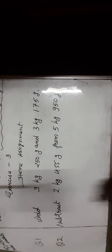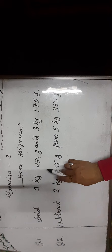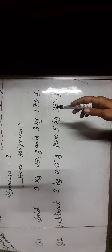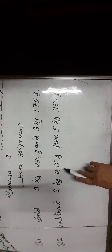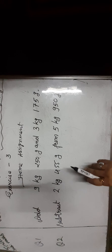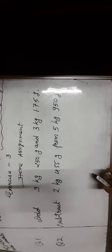Your homework is: add 9 kilogram 250 grams and 3 kilogram 175 grams, and subtract 2 kilogram 455 grams from 5 kilogram 950 grams. Write in vertical columns and try to solve it in your homework copy. Okay, thank you.